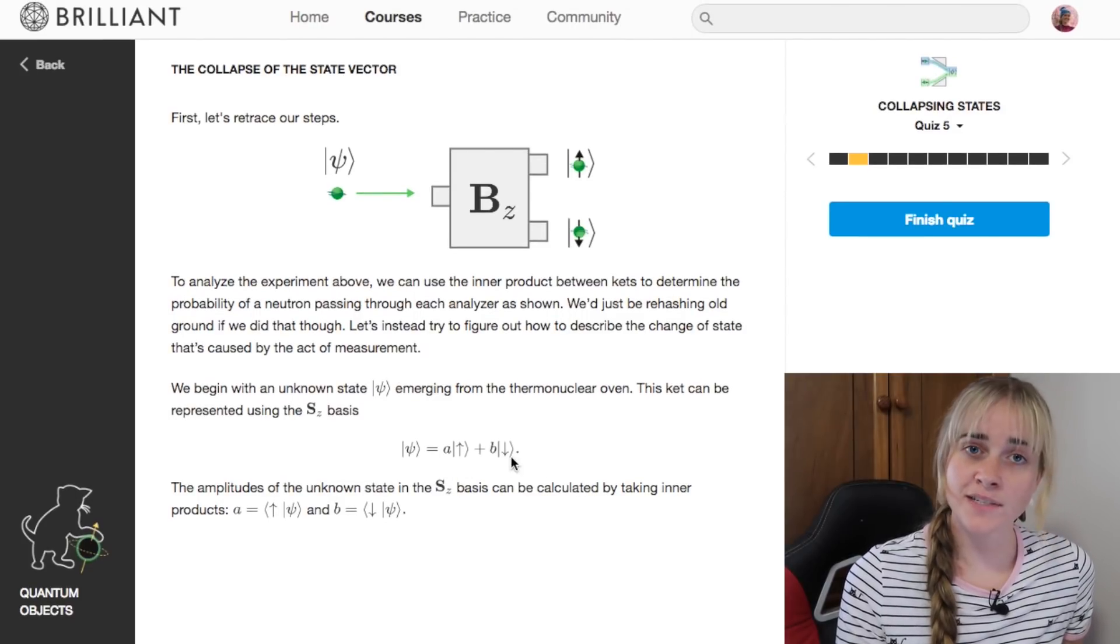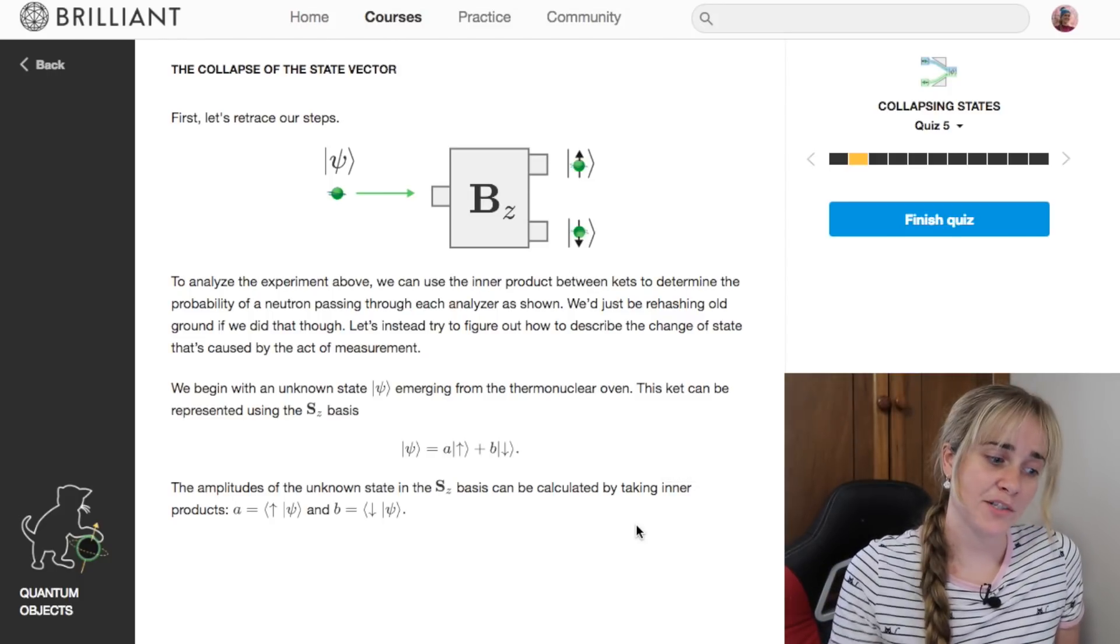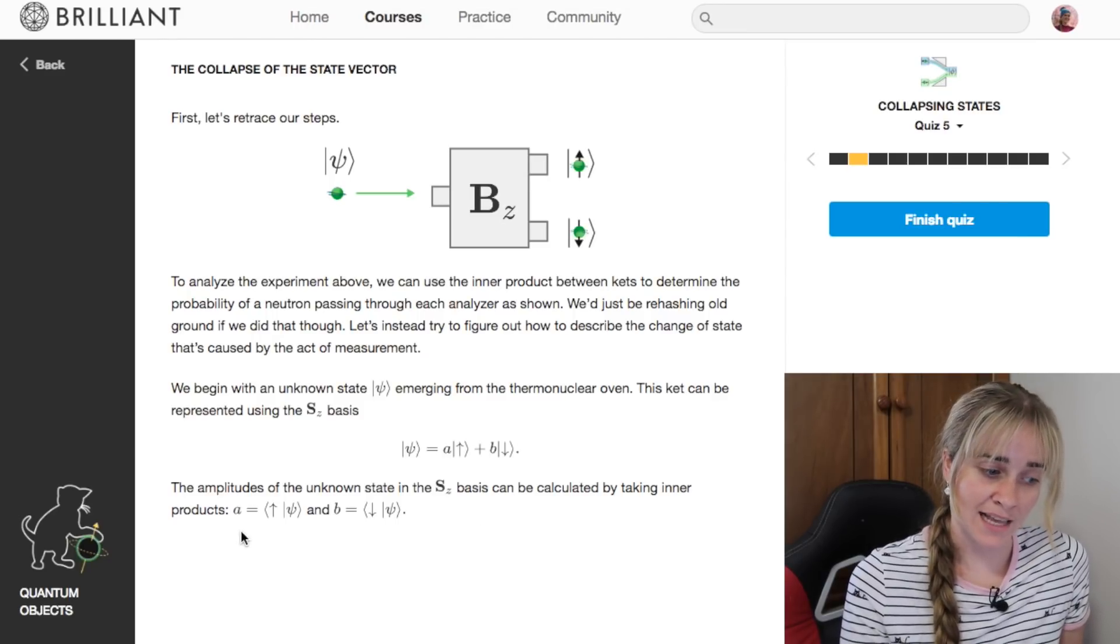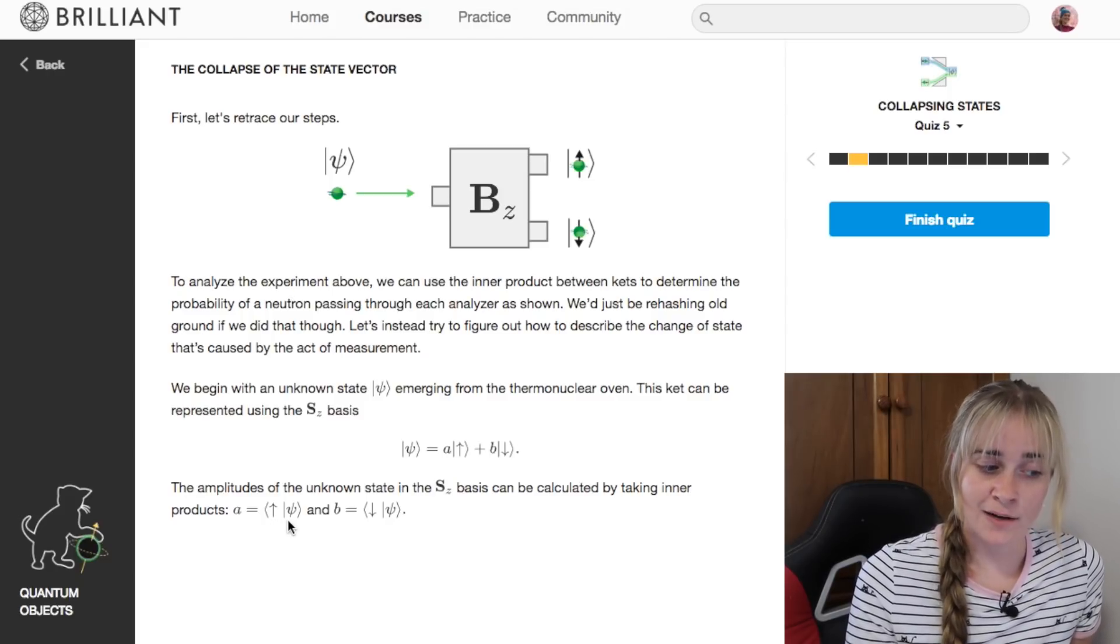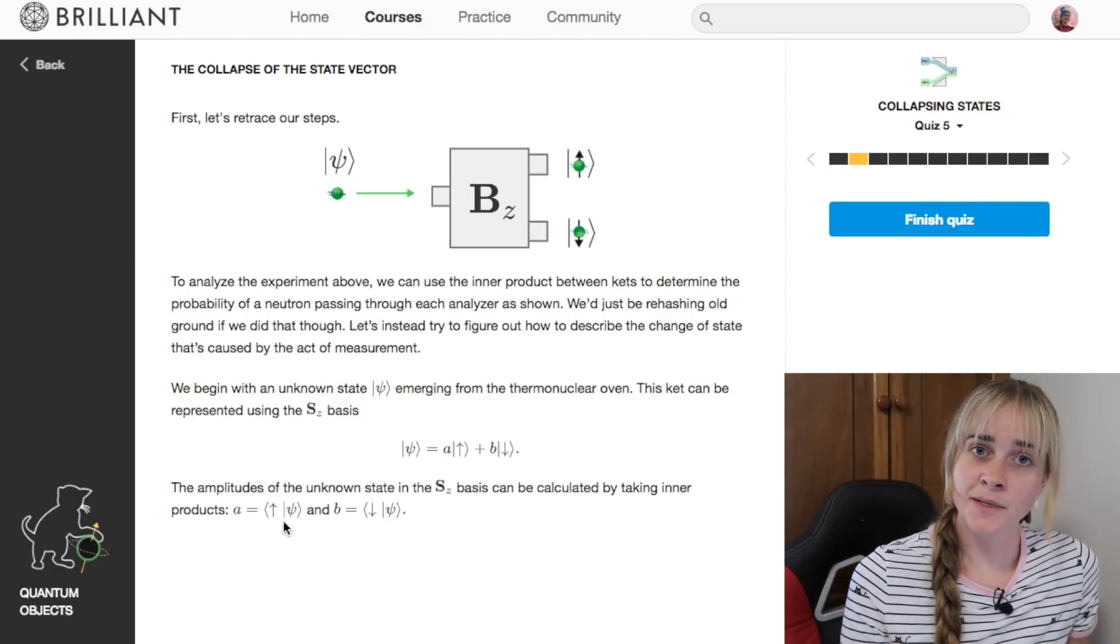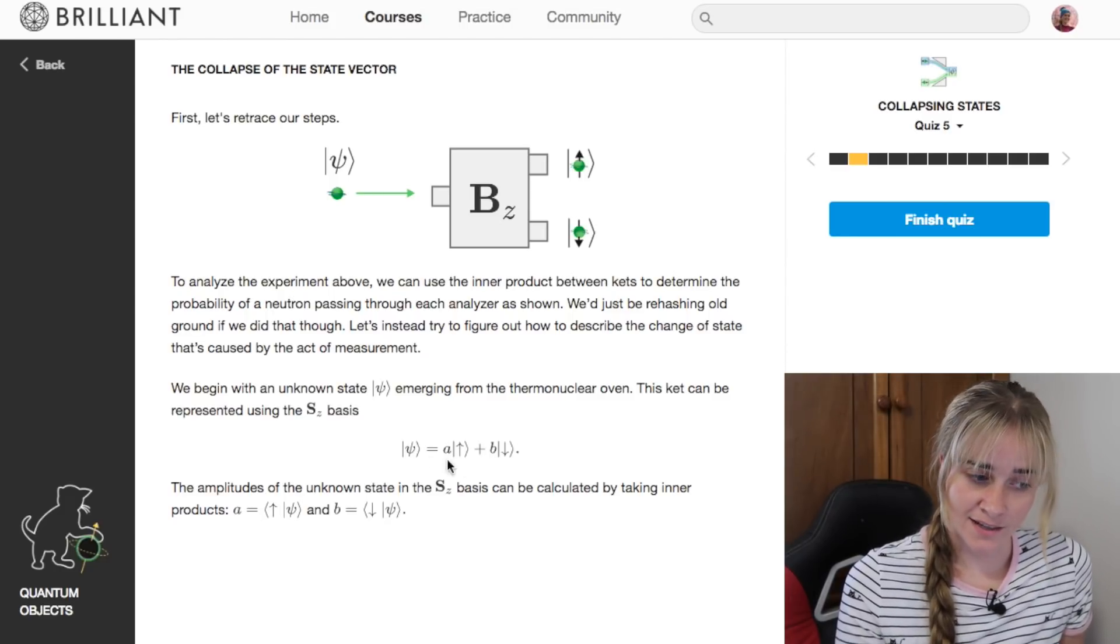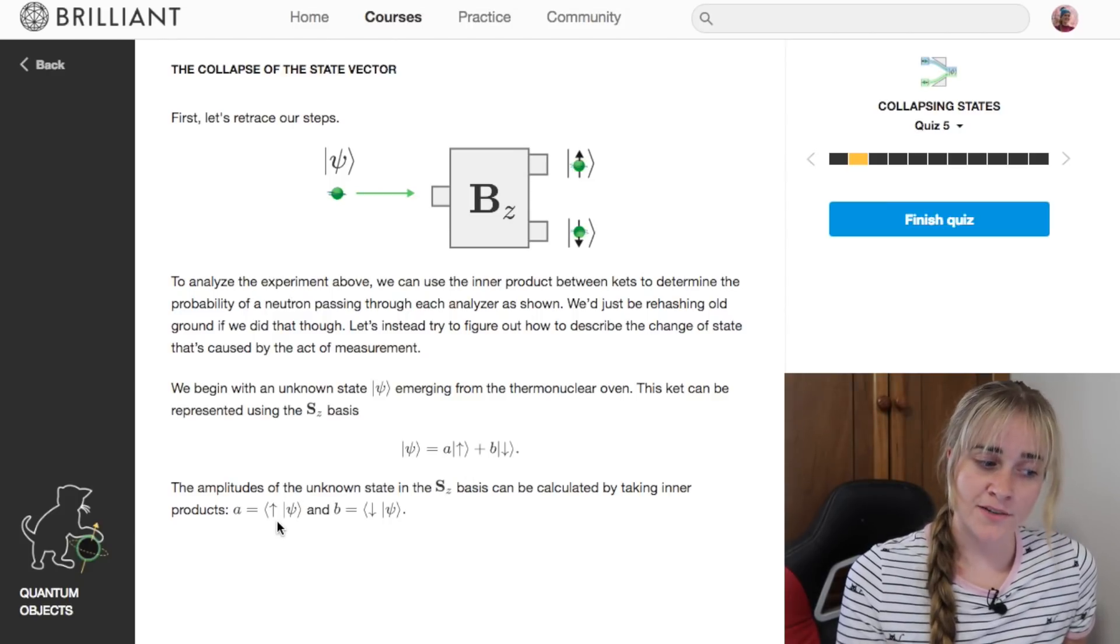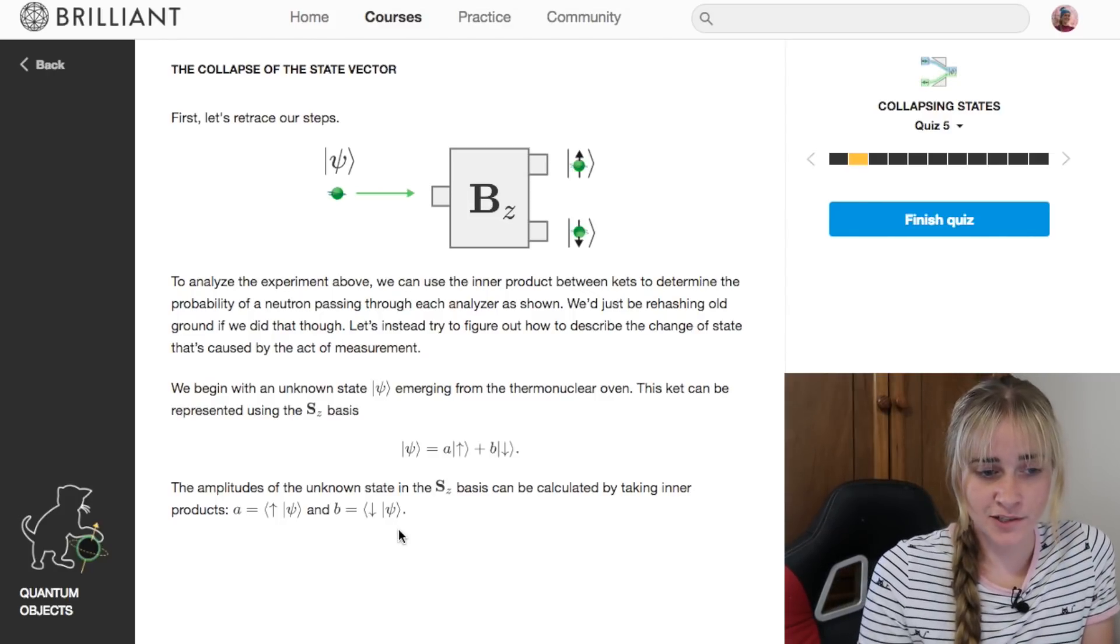These a and b values are scalars, so they're numbers, and they are the probability amplitudes of being spin up or spin down. You could also write a and b like this, where a is the inner product between spin up and our unknown state. This kind of makes sense because the inner product is an amount of overlap, so the probability of how much you are spin up is the overlap between spin up and your unknown input.